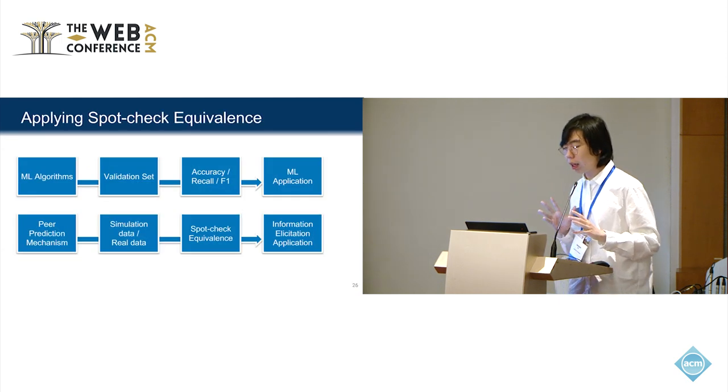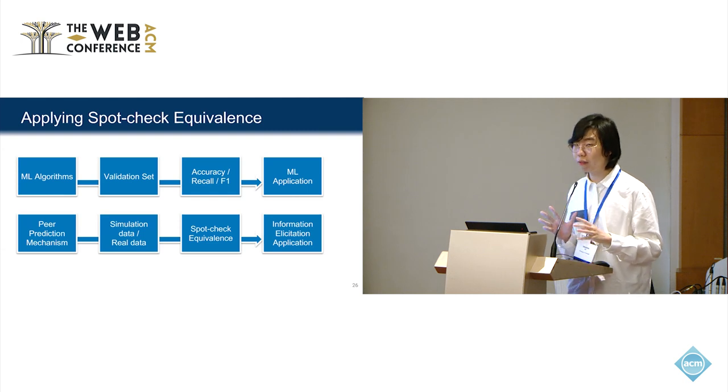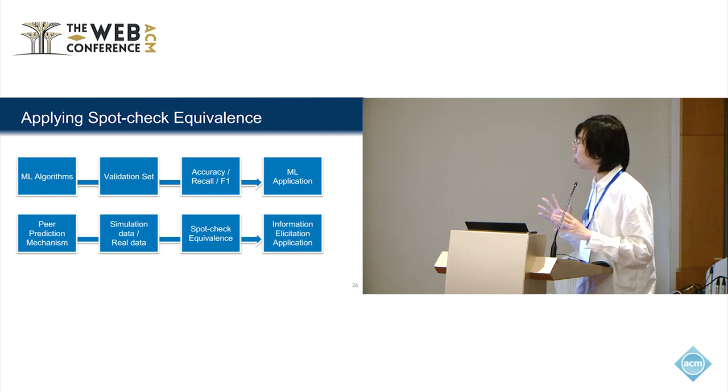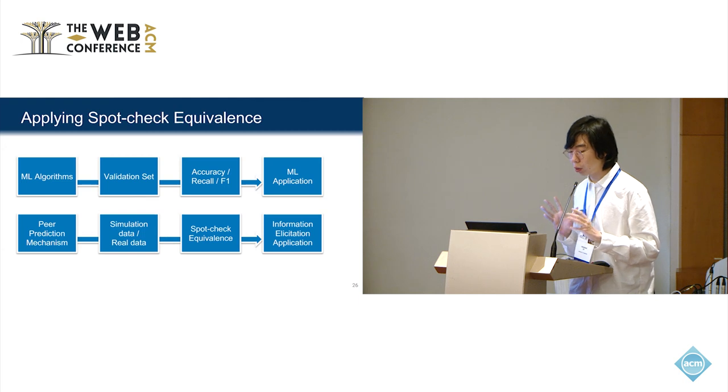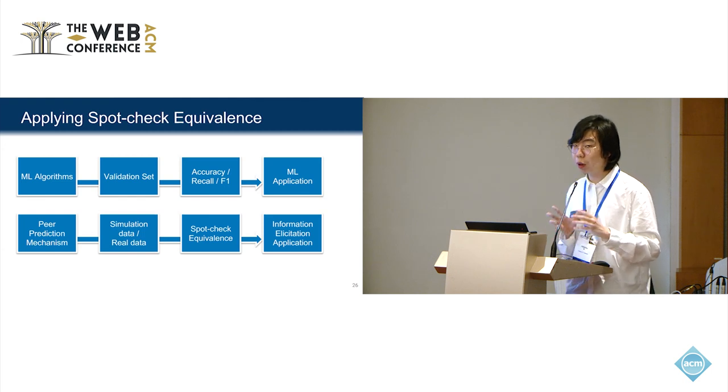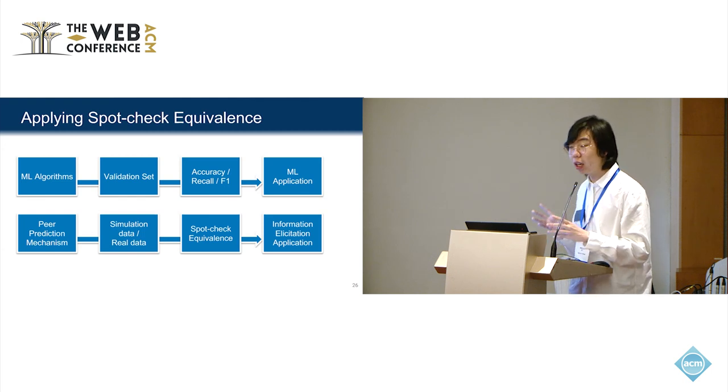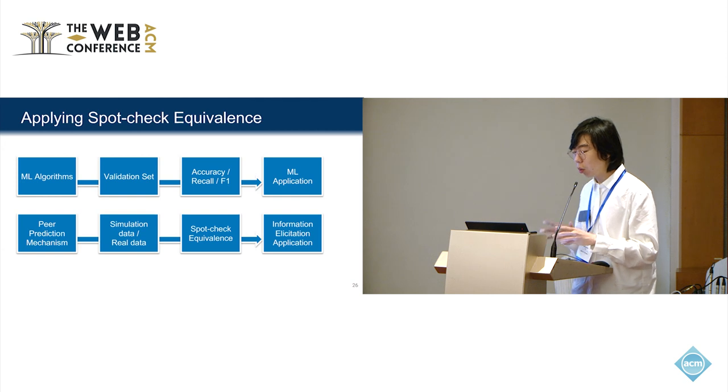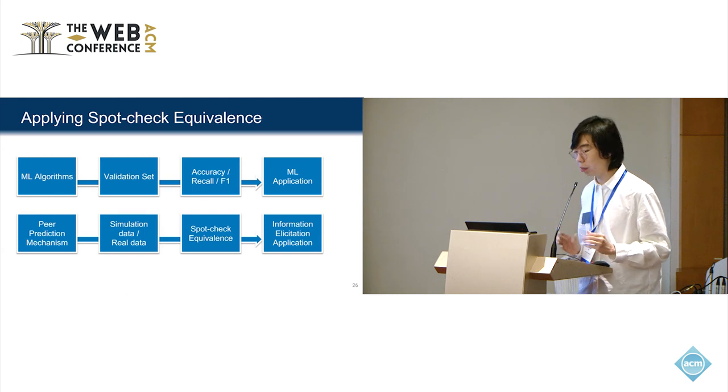Finally, let me introduce how to apply spot-check equivalence. It's a metaphor of supervised learning. In supervised learning, if we get some algorithm, we test it on the validation set and compute the accuracy, recall, or F1 score. If it's good enough, we put that into application. Similarly, for peer prediction mechanisms, we can validate on some simulation data or real data and compute the spot-check equivalence. If it's good enough, we put that into information elicitation applications.